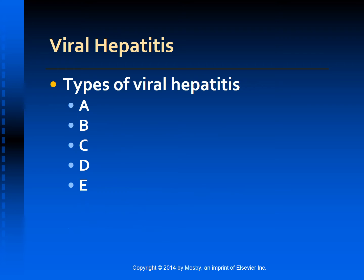Types of viral hepatitis are A, B, C, D, and E. They differ in their modes of transmission and clinical manifestations. The different hepatitis viruses can be responsible for both acute and chronic liver disease.